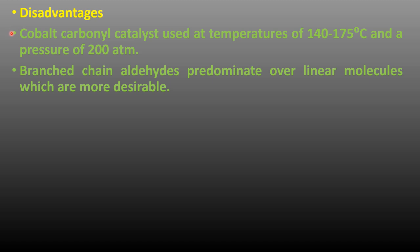Disadvantages include that the cobalt carbonyl catalyst is used at temperatures of 140 to 175 degrees Celsius and pressures of 200 atmospheres. This is high temperature and high pressure. The branched chain aldehydes predominate over linear molecules, which are more desirable.